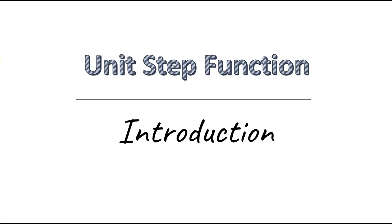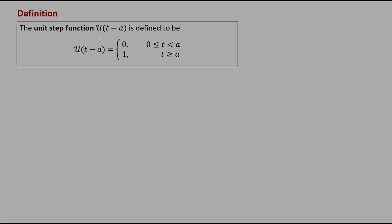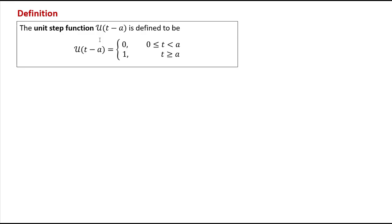Hi everyone! In this video we're going to learn about a very useful function called the unit step function. Here is its definition: the unit step function is a piecewise defined function. It takes value 0 for values of t from 0 to a, and it takes value 1 for t equals a or anything greater. It's usually denoted by this fancy u, and the value of t at which this change happens from 0 to 1 is written over here.